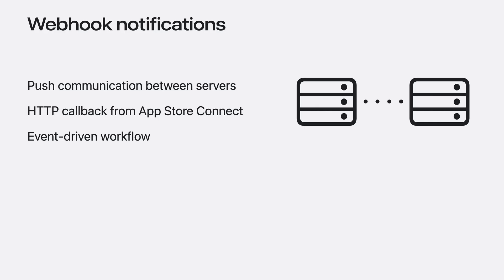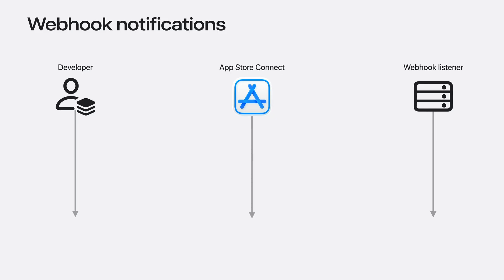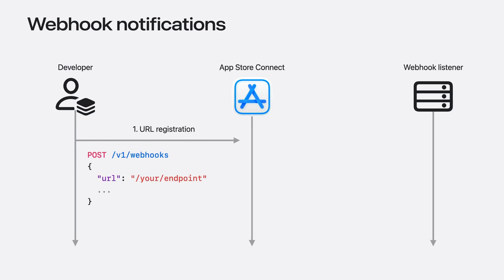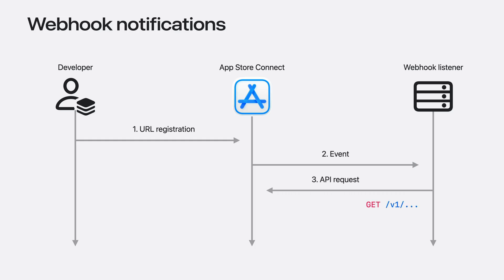Technically speaking, it's an HTTP callback from App Store Connect to your server when a specified event occurs related to your app. This allows you to build event-driven workflows, which are far more efficient than constantly polling App Store Connect for updates. Assuming that you have an HTTP server which will be your Webhook listener, you start by giving App Store Connect the URL of your Webhook listener — basically telling App Store Connect where to send updates. Then, whenever a relevant change occurs, it sends a POST request to your registered URL. The request payload contains information about the event, and your system can query the App Store Connect APIs for more information or perform necessary actions.